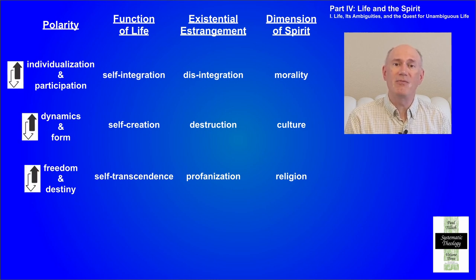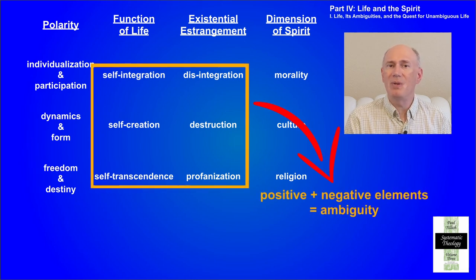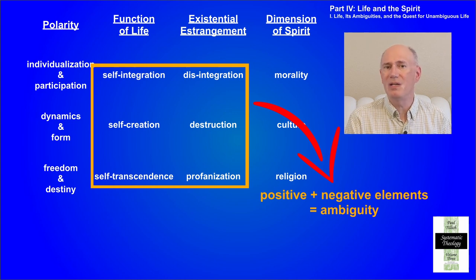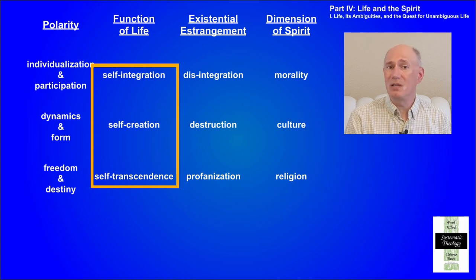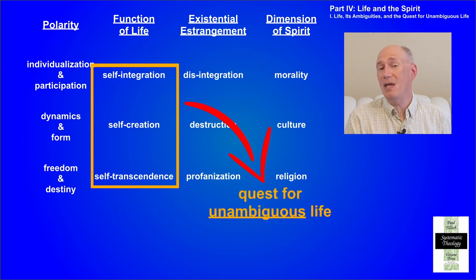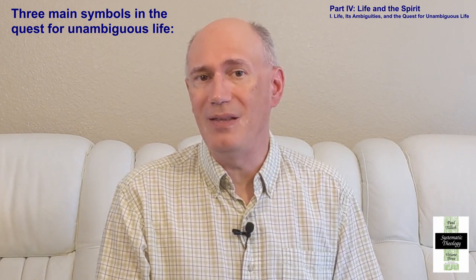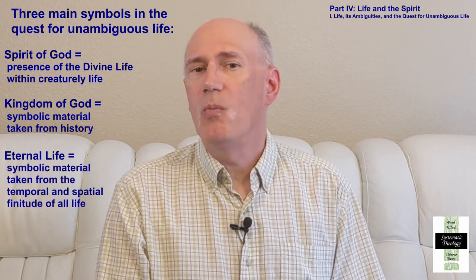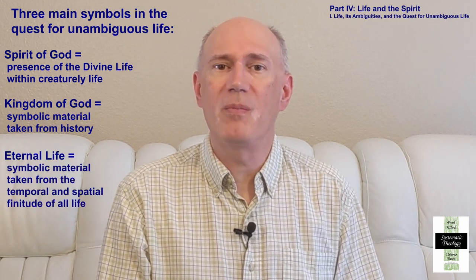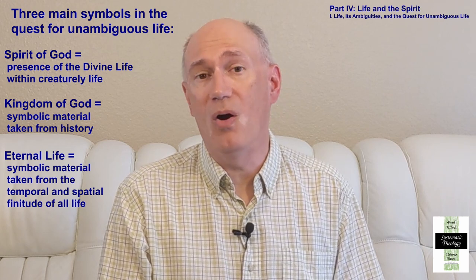We are constantly moving back and forth in each of these polarities. Every life process has ambiguity because positive and negative elements are mixed such that there can be no definite separation of the two. The quest out of this dilemma is the quest for unambiguous life. In this quest, Christianity has produced three main symbols: the Spirit of God, the Kingdom of God, and Eternal Life.